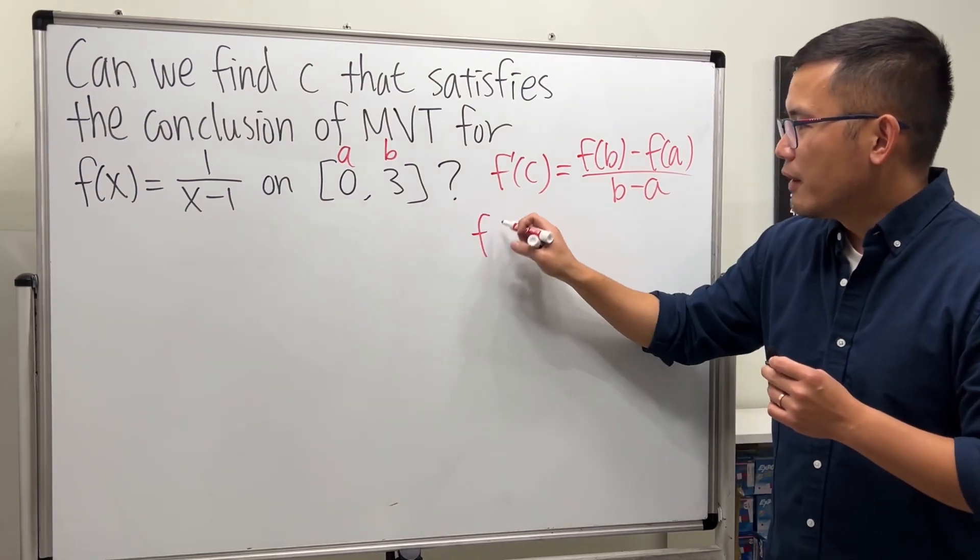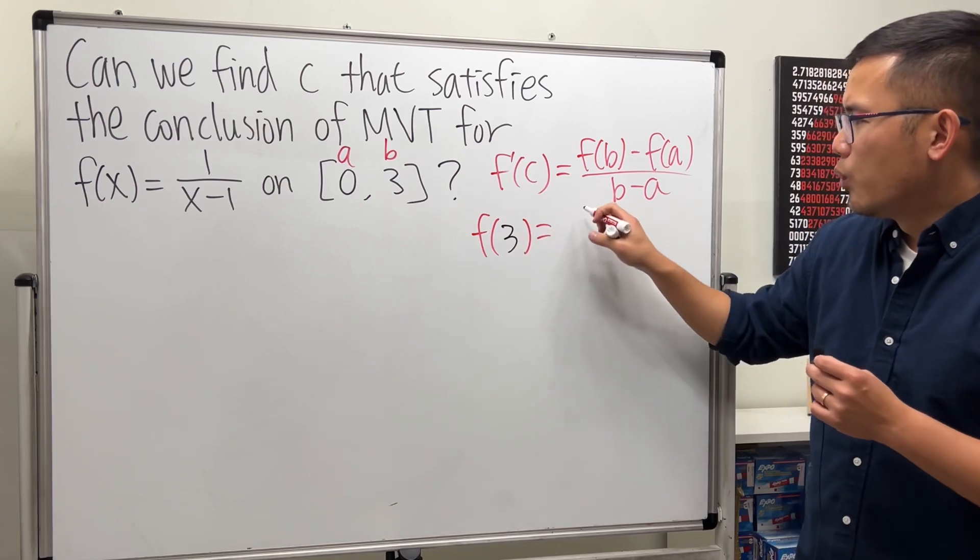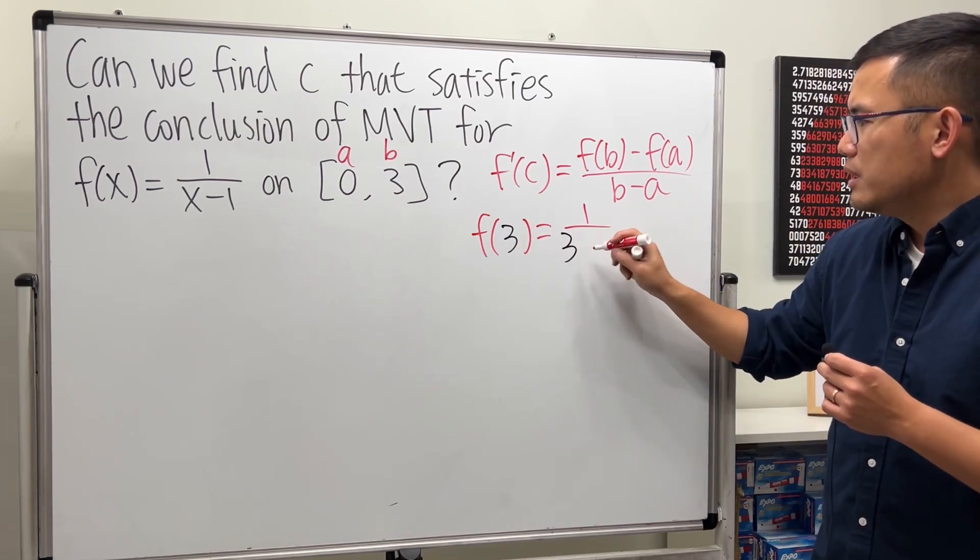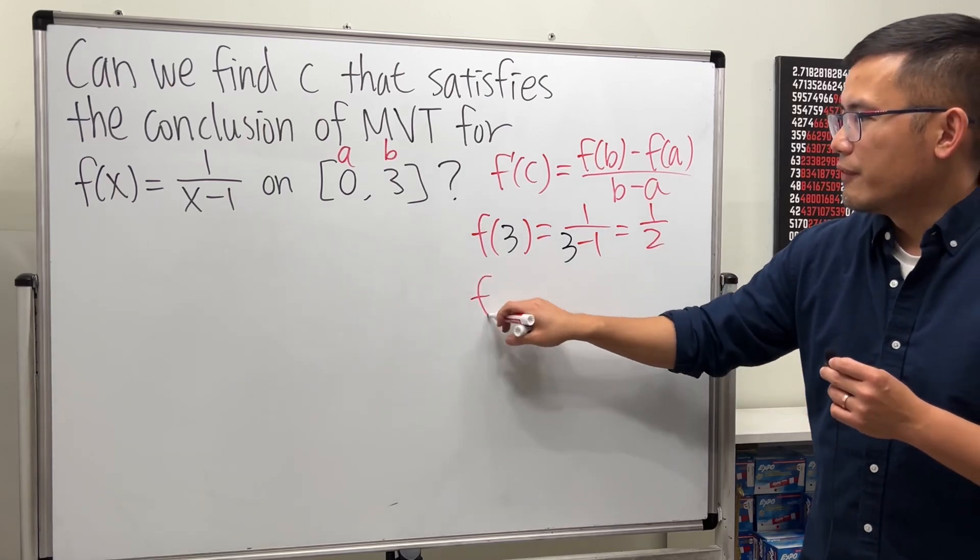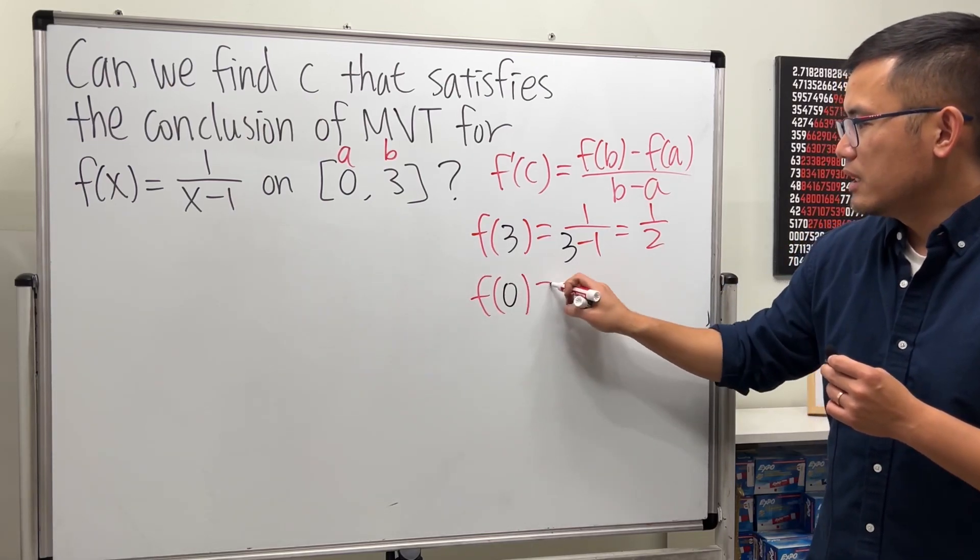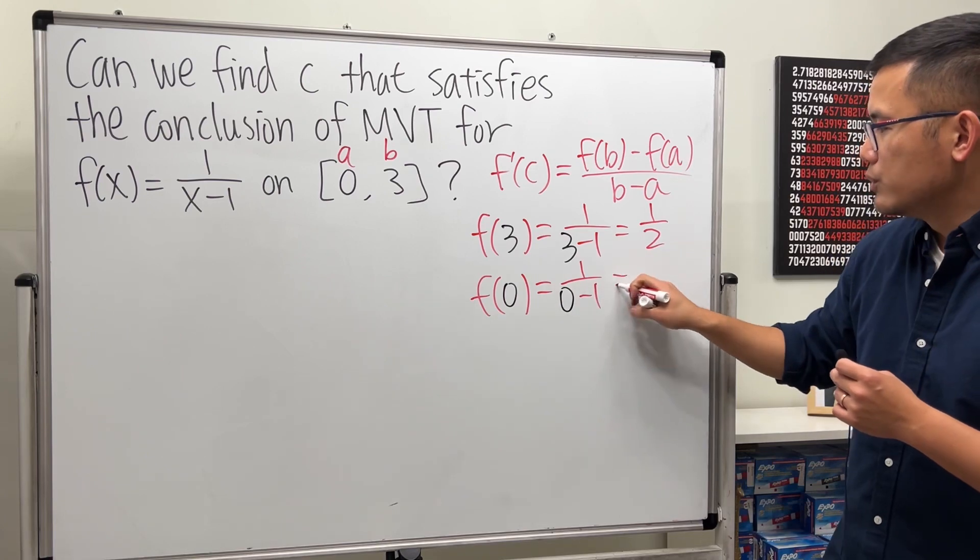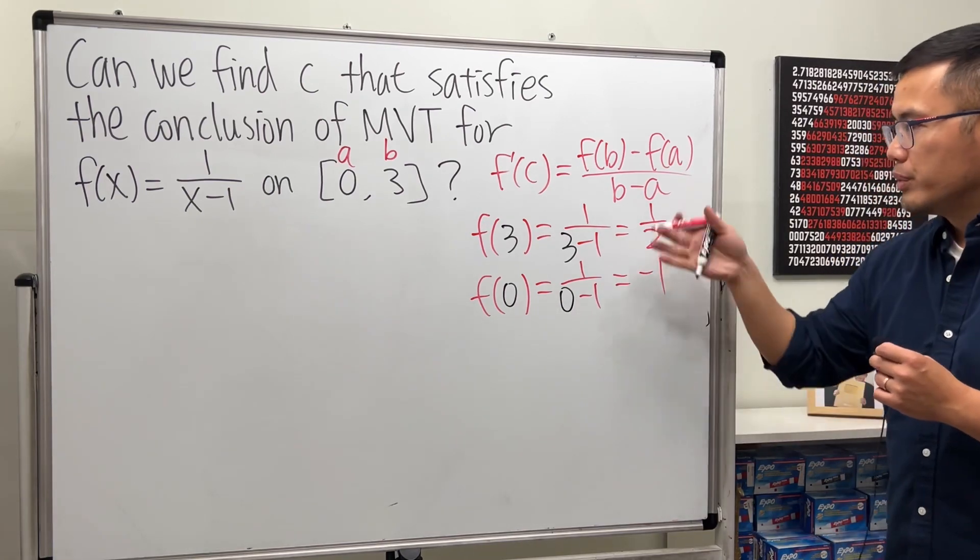So f of 3, this is just going to be 1 over 3 minus 1, which is 1 half. And then f of 0, that is 1 over 0 minus 1, which is negative 1.